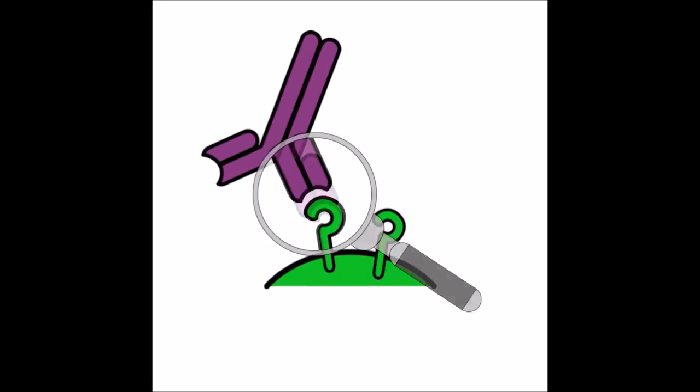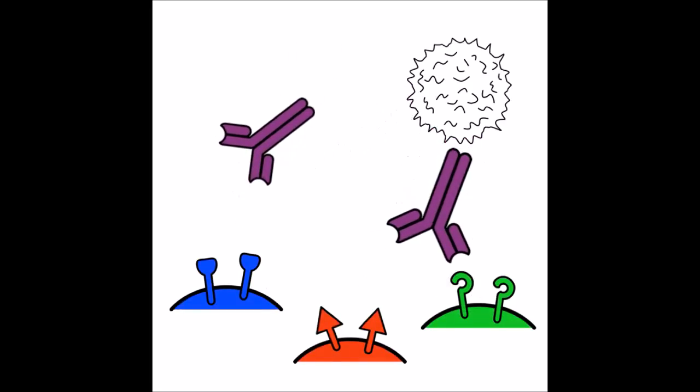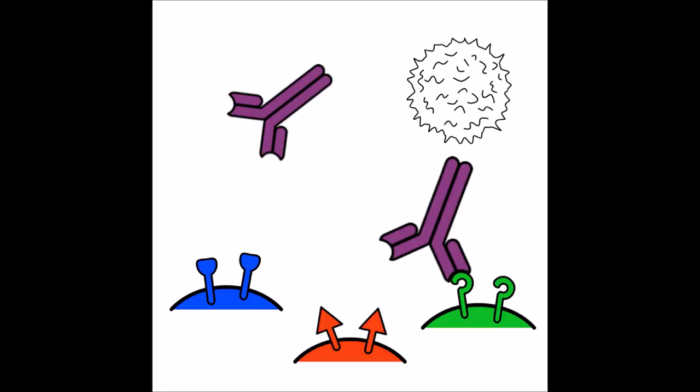Different antibodies have different shapes, which match the different shapes of the antigens. In this way, antibodies are very specific, meaning that each antibody can only bind to one particular surface antigen, like a lock and a key.